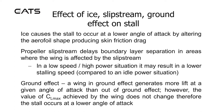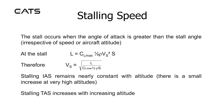Ground effect. A wing in ground effect generates more lift at a given angle of attack than out of ground effect. However, the value of CL max achieved by the wing does not change. Therefore the stall occurs at a lower angle of attack.